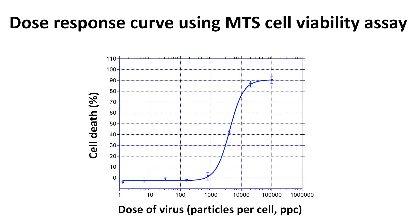This graph shows the results of today's MTS assay. Here I have plotted cell death on the y-axis versus increasing concentrations of virus in the x-axis. The amount of cell death is expressed as a percentage. This number is calculated by comparison with the results for untreated cells, which are used as a control. The dose of the virus is expressed in particles per cell, or PPC. As the dose of virus increases, the cell death also increases.